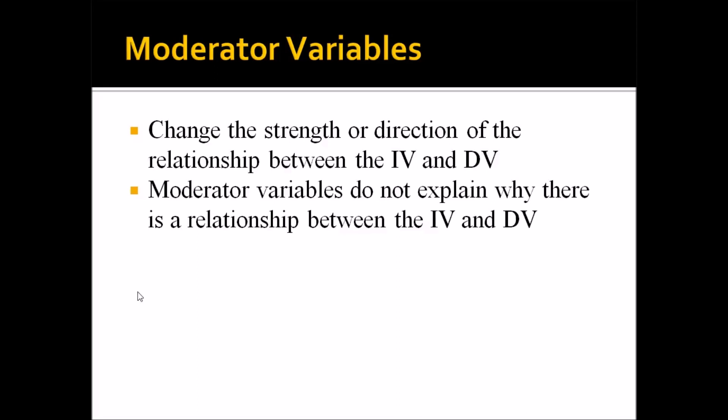When talking about moderator and mediator variables, I'm going to use the example of linear regression. In linear regression, the independent variable is referred to as the predictor variable, and the dependent variable is referred to as the outcome variable. For the purposes of this video, I'll continue to use IV and DV, but know that those terms are interchangeable.